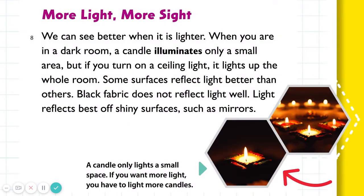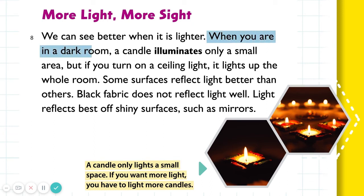What about the photo? Isn't that a feature? Photos are one type of graphic that helps us understand the information. And what about the sentence under the photo? Remember what it's called? Caption. Tell me about that caption. Well, it repeats an idea in the paragraph — when you are in a dark room, a candle illuminates only a small area. But then it says something else — it's additional information.